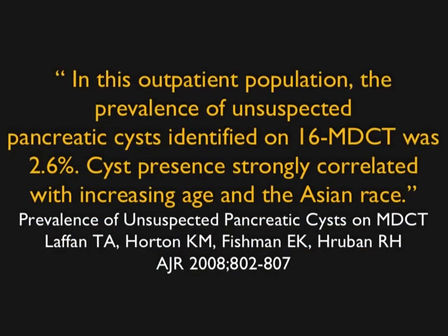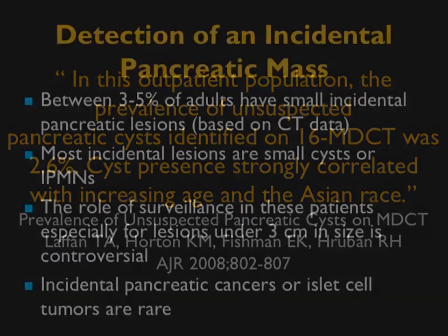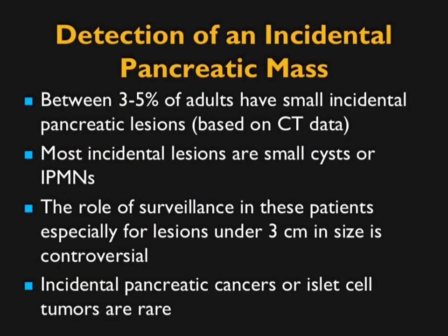Almost 3% of patients incidentally will have pancreatic cysts — this was from an article we wrote a couple of years ago on a 16-slice scanner. The better the scanner, the more likely you will see cystic lesions. With MR, articles show 20% of patients or more have cystic lesions, particularly tiny ones. So this number of 3 to 5%, most are incidental or IPMNs. The question is: how do you need to watch these patients? Can you dismiss them as not important, or do you need to follow them?